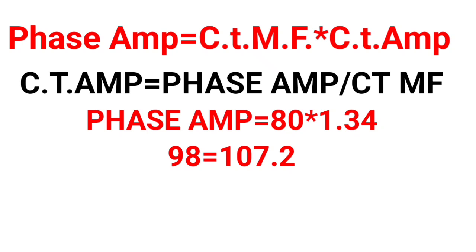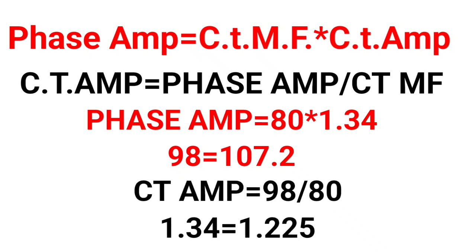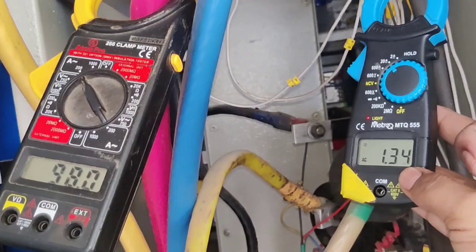The reading is different, but we can consider a 5% tolerance. Using the second method: CT ampere = 98 ÷ 80 = 1.22 amperes expected. But in actual, we find 1.34 amperes in the CT. The rating is different, but 5% can be considered. So R phase CT is borderline but can be considered within tolerance.